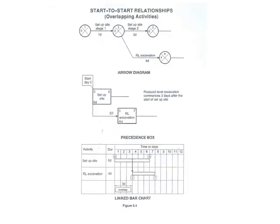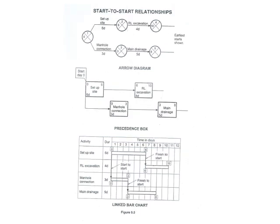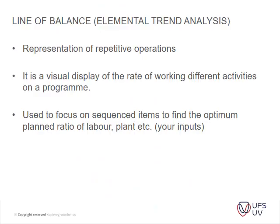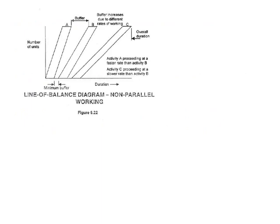Cook and Williams also explains your finish-to-start relationship and link bar chart relationships, which is basically what we already looked at but explained better. You will need to be able to explain start-to-start relationships, finish-to-finish relationships, and start-to-finish relationships. Then line of balance is your elemental trend analysis - it represents repetitive operations and is a visual display of the rate of working across different activities on a program. It's used to focus on sequenced items to find the optimum plant ratio of labor, plant, etc.